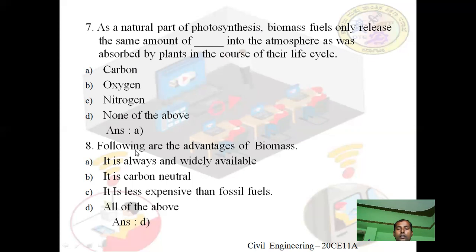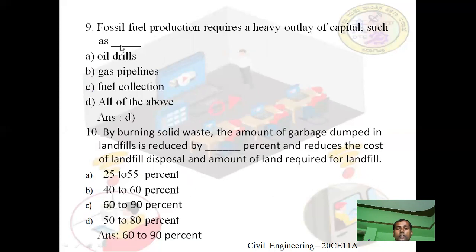Question: Which of the following are advantages of biomass? Option A: it is always and widely available. Option B: it is carbon neutral. Option C: it is less expensive than fossil fuels. Option D: all of the above. Answer is D — all of the above. Biomass is always and widely available, it is carbon neutral, and it is less expensive than fossil fuels.